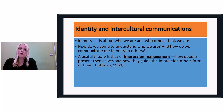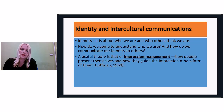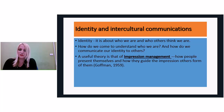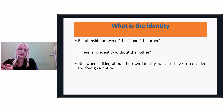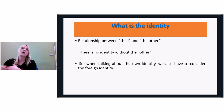Now we go to the issue of identity and intercultural communication. We all know that identity is about who we are and who others think we are. How do we come to understand who we are, and how do we communicate our identity to others? One theory is impression management, given by Goffman, who says this is how people present themselves and guide the impression others form of them. Identity is the relationship between the I and the other — there is no identity without the other. It is always related to the people around us.